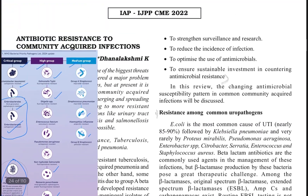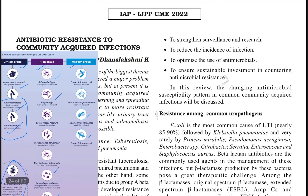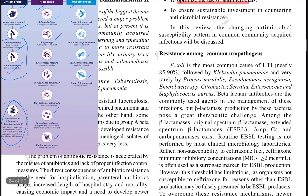The main objectives of the global action plan are to improve awareness regarding antimicrobial resistance, to strengthen surveillance, to reduce the incidence of such resistant infections, and if resistance occurs, to optimize the use of antibiotics. We also need to invest in creating more new antibiotics so that these organisms can be combated. These are the goals of the global action plan.